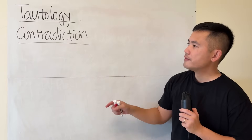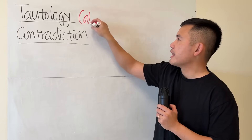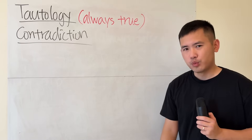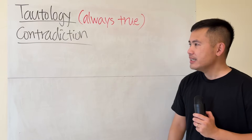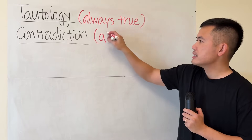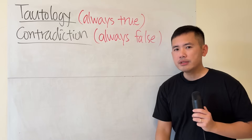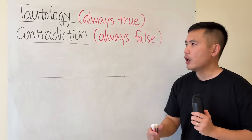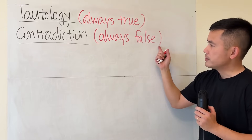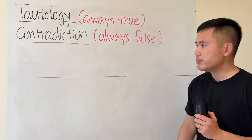Let's talk about tautology versus contradiction. A tautology is something that is always true. On the other hand, a contradiction is something that's never true — it is always going to be false. Pay close attention to the truth table: it's always going to give you true for a tautology and always false for a contradiction.